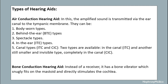Air conduction hearing aids can be body-worn types, behind-the-ear types, spectacle types, in-the-ear types, and canal types. The two types of canal hearing aids include in-the-canal and completely-in-the-canal, the latter being an invisible type.